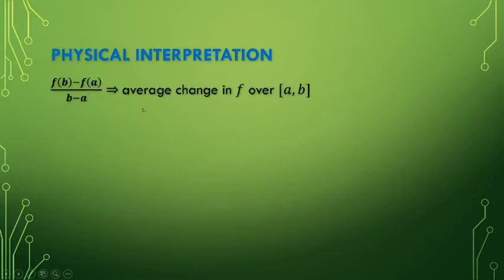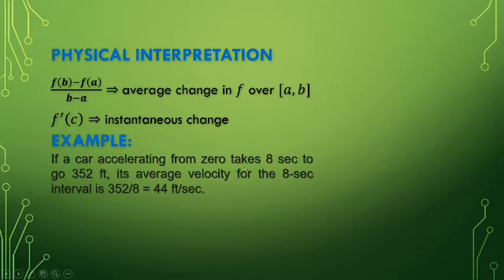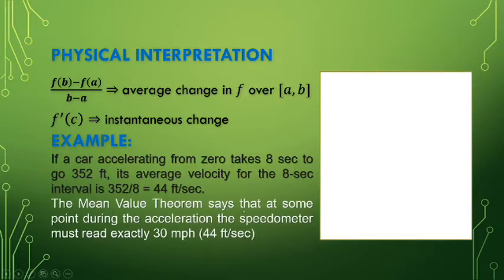The slope of the secant line equals the average change in f over the closed interval [a, b], and f'(c) is the instantaneous change. For example, if a car accelerating from 0 takes 8 seconds to travel 352 feet, its average velocity over that 8-second interval is 44 feet per second, or 30 miles per hour. So the mean value theorem says that at some point during the acceleration, the speedometer must read exactly 30 miles per hour.